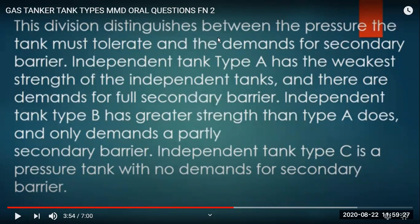There is a primary barrier, secondary barrier, and the space between them should be able to hold pressure as well. Independent type A has the weakest strength and there are demands for a full secondary barrier. Independent type B has greater strength than A and demands only a partial secondary barrier. Independent type C is a pressure tank, so no secondary barrier is required, but the metal required to build it is very thick - pressure vessels.